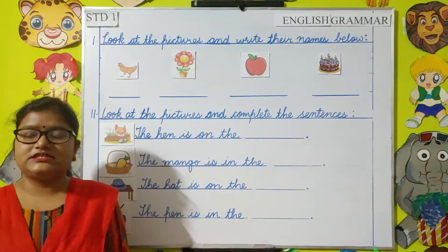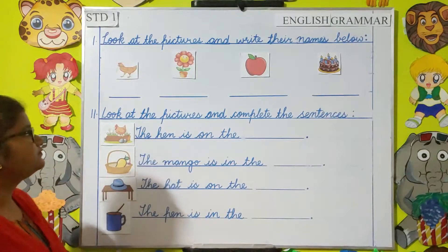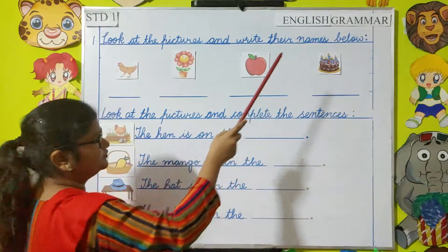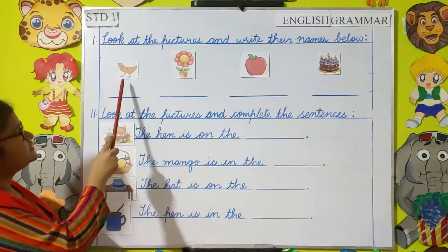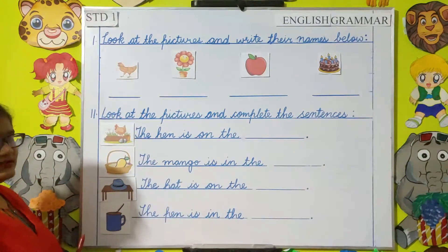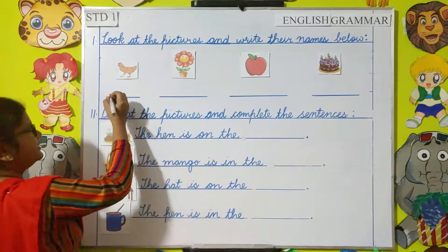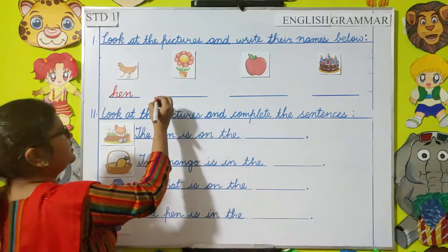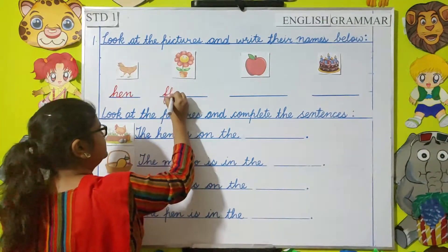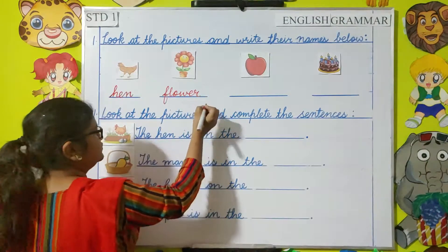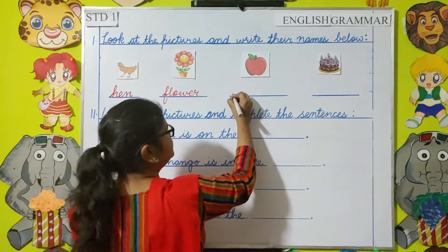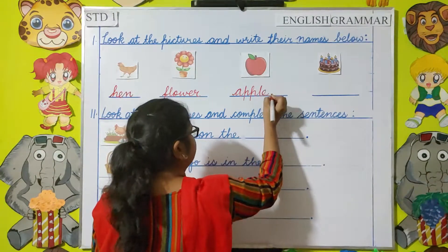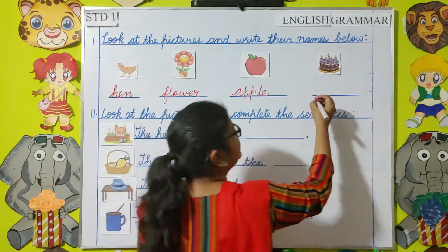Now we will see the exercises from the book. First one: look at the pictures and write their names below. What is this? Hen. So what will we write here? Hen. This flower. What is this? Apple. This one: cake.